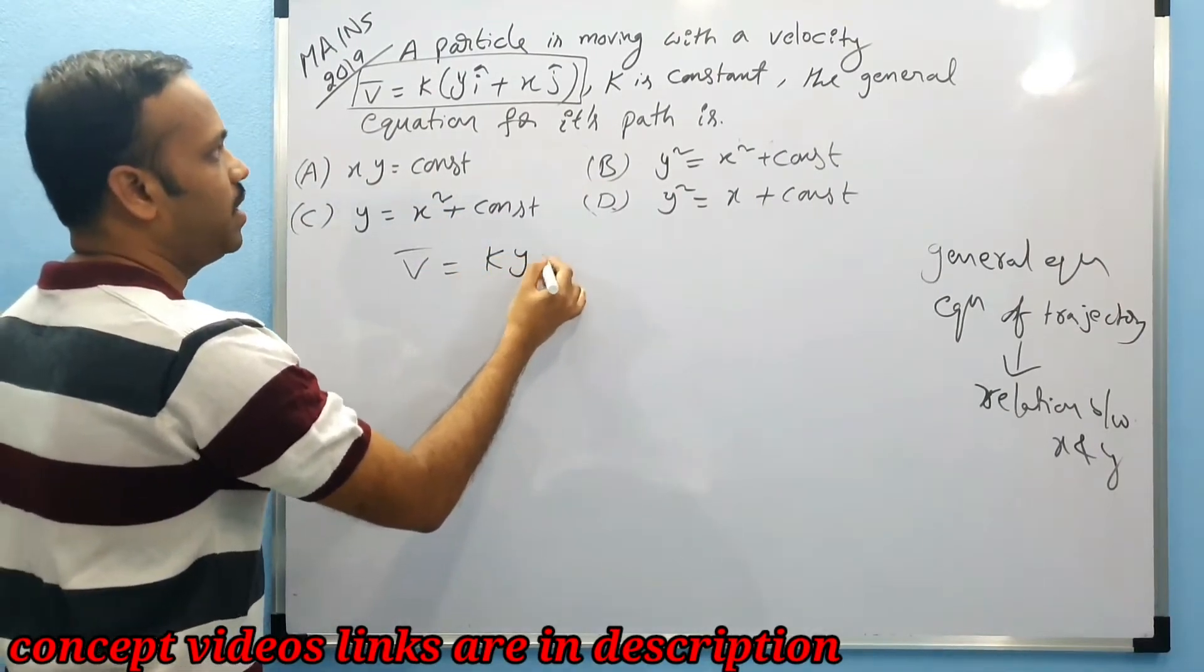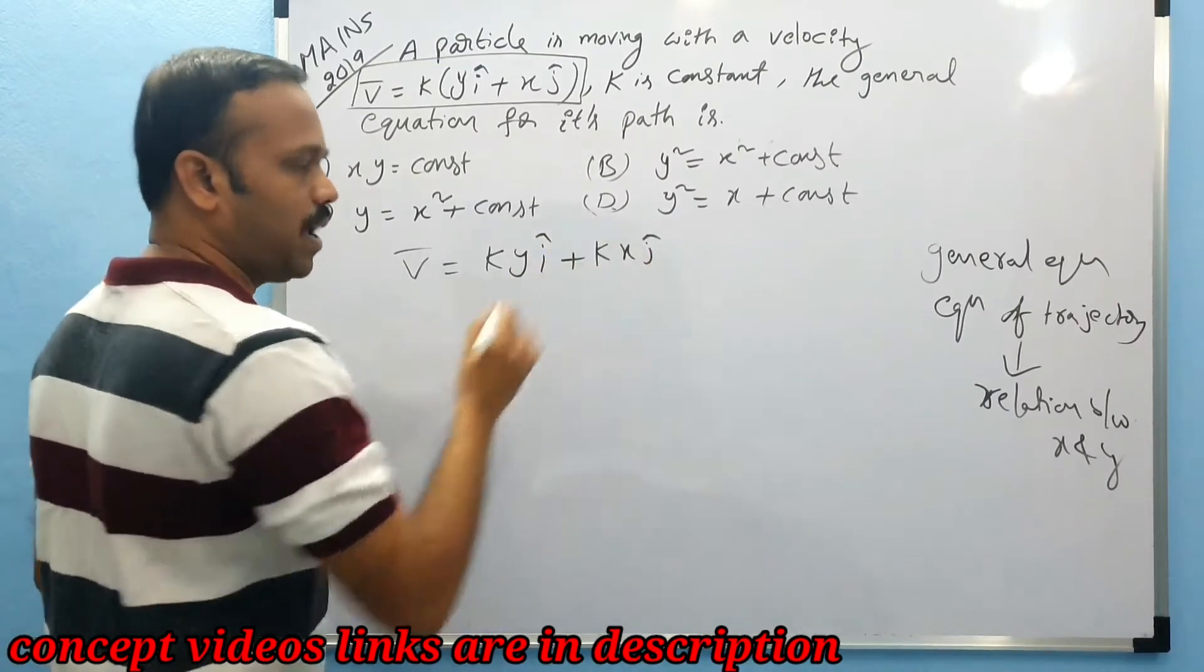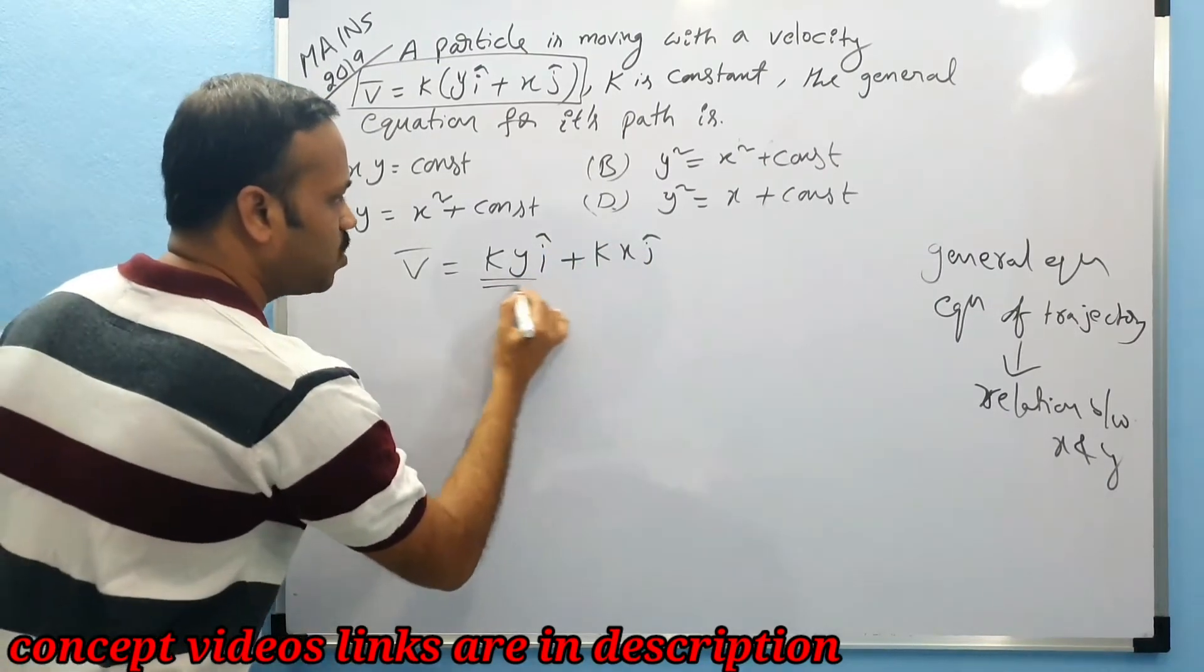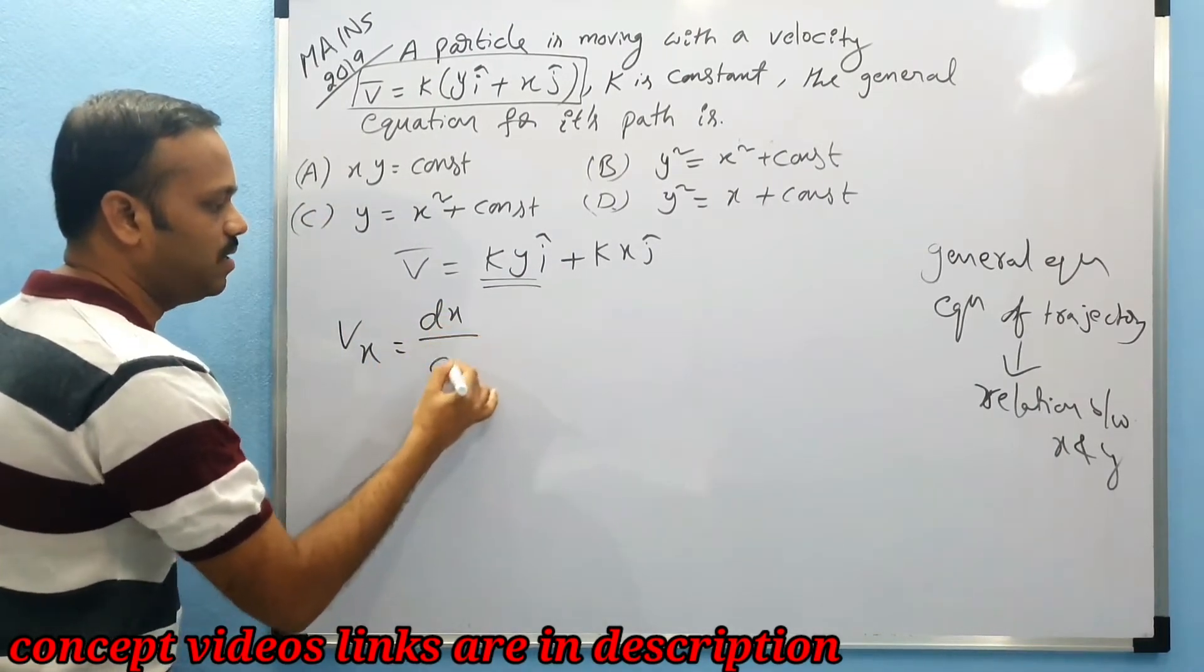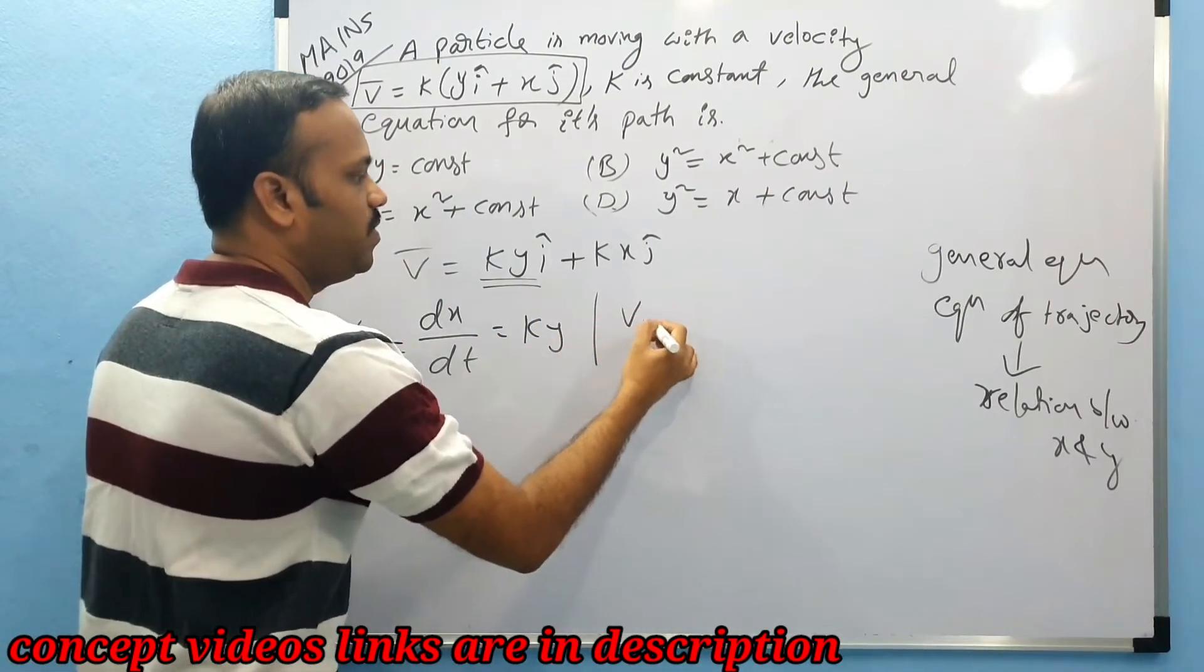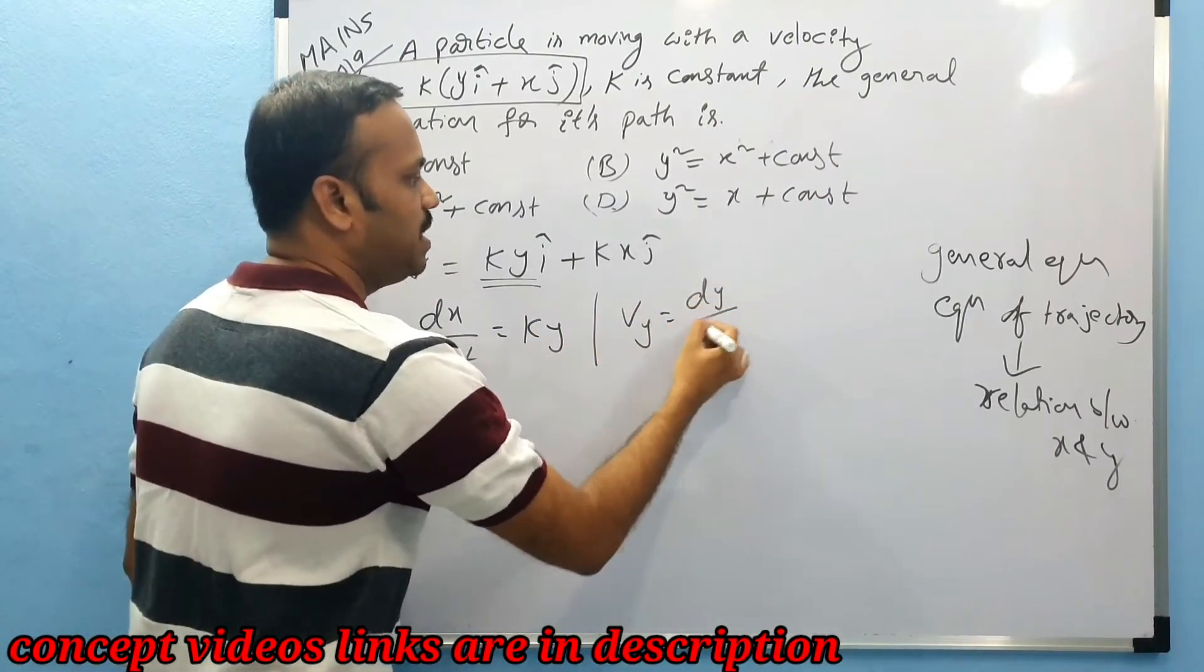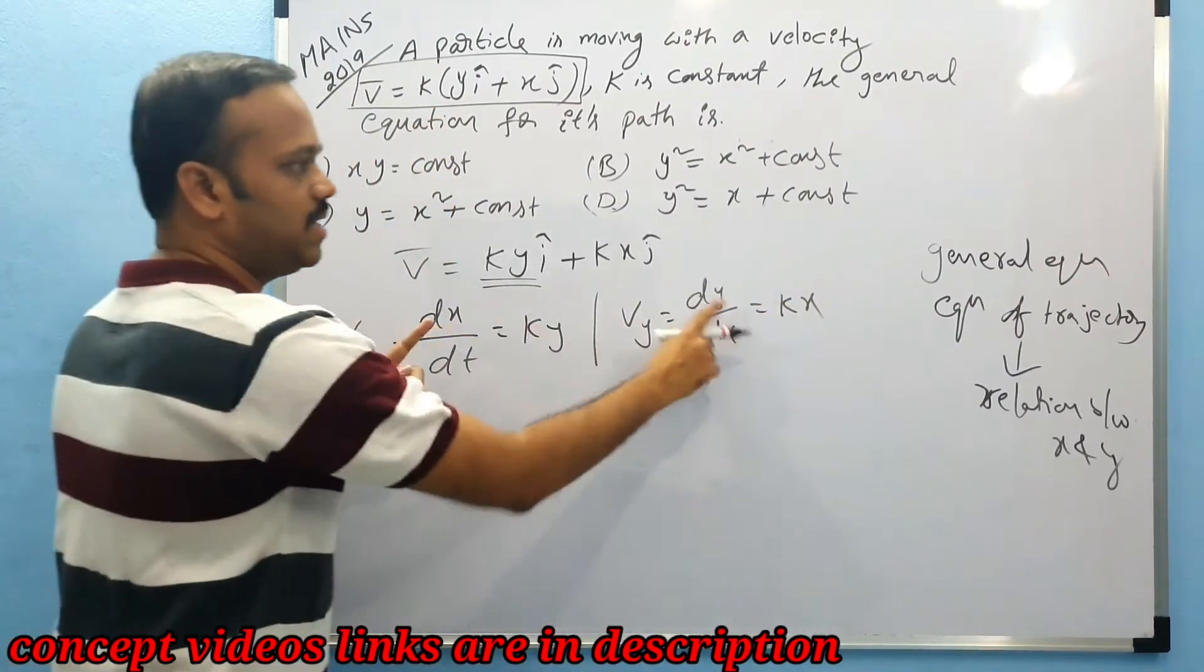Then what is x component? k y. So I can write vₓ which is nothing but dx/dt equals k y. Similarly, vᵧ which is nothing but dy/dt is given by k into x.